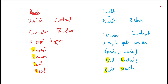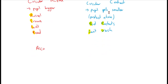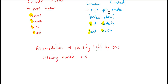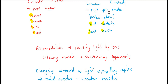That's the end of the eye section. The key distinction to avoid confusing: accommodation — changing the shape of the lens to focus light — involves the ciliary muscle and suspensory ligaments. The pupillary reflex — changing the amount of light entering — involves the radial muscles and circular muscles. Make sure you don't get those two mixed up.